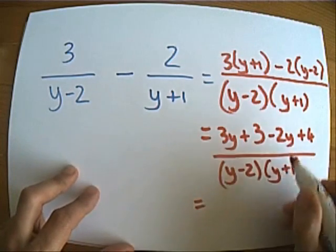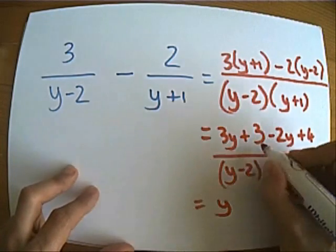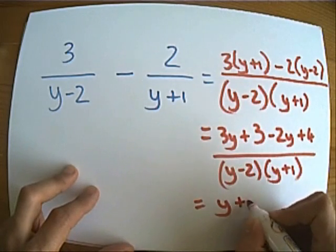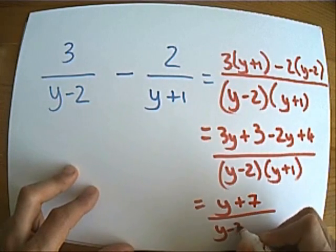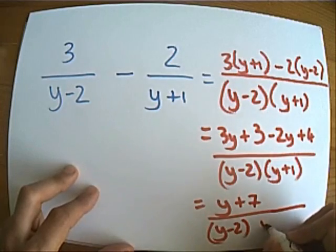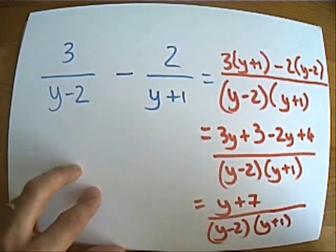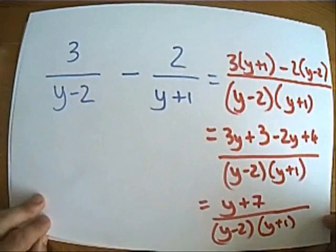Let's tidy it up a bit further. 3y take away 2y is y, 3 plus 4 is plus 7, all over y minus 2 times y plus 1. So there we are.